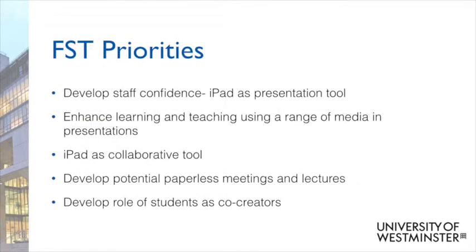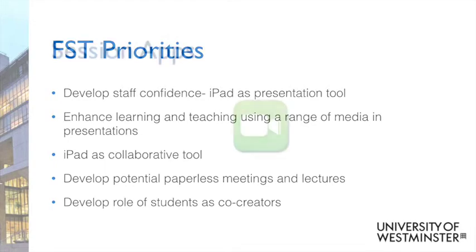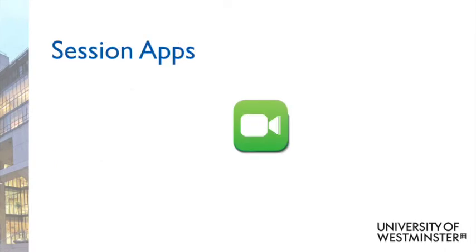On the screen are the five priorities identified by FST as key indicators of success as part of this mobile learning project. In this session, we will be using some apps, and we have already covered their usage. We can point you back to videos available in the FST mobile learning YouTube channel, but there are also some new apps.